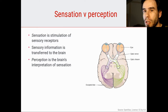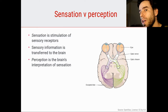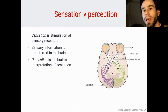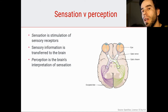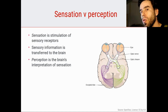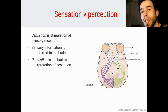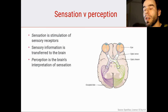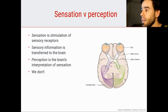The end product of the processing of all that sensory information is perception. You could say that perception is our brain's interpretation of the information that our brain receives from the senses. So sensation would be a more low-level physiological construct, whereas perception would be a more high-level psychological construct. That's the distinction we usually make.